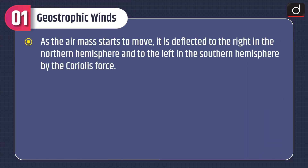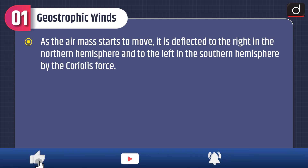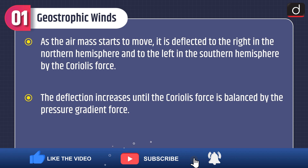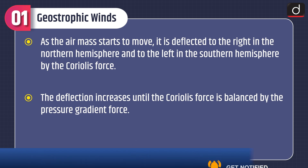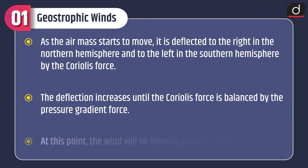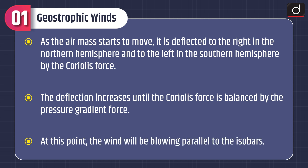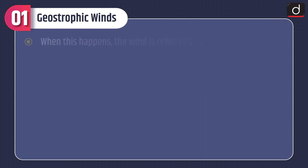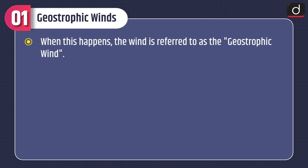First of all let's discuss about geostrophic winds. As the air mass starts to move, it is deflected to the right in the northern hemisphere and to the left in the southern hemisphere by the Coriolis force. The deflection increases until the Coriolis force is balanced by the pressure gradient force. At this point, the wind will be blowing parallel to the isobars. When this happens, the wind is referred to as the geostrophic wind.